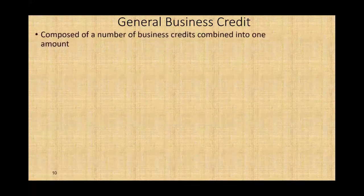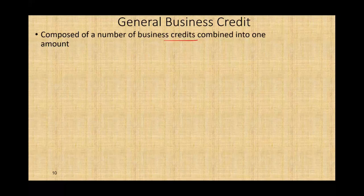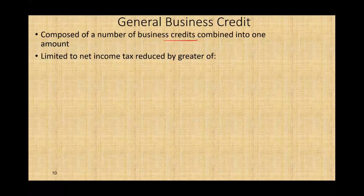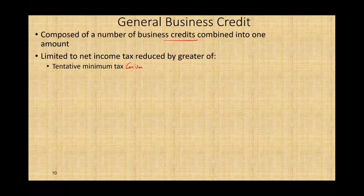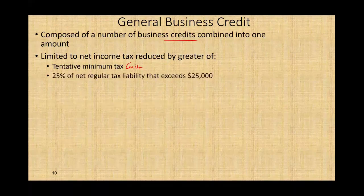The general business credit is limited to net income tax reduced by the greater of: the tentative minimum tax — the alternative minimum tax, which will be given to you — or 25% of the net regular tax liability that exceeded $25,000. Basically, we're comparing two numbers. Let's look at an exercise to see how this works.